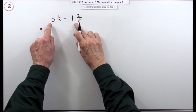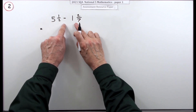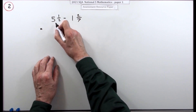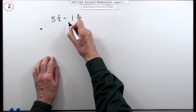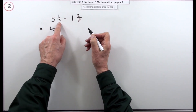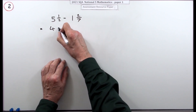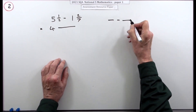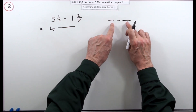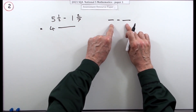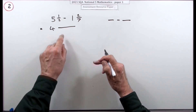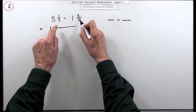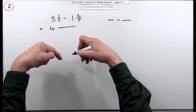Five and a half just means you've got a five and a half, and you're going to take away one and two sevenths. You can do them in any order, so do the whole numbers first: five take away one is four. Then do the half take away two sevenths — put them over the same denominator, which will be the denominator of the answer.